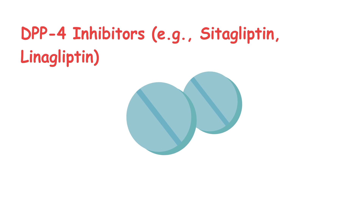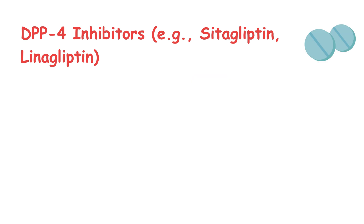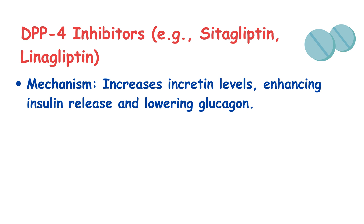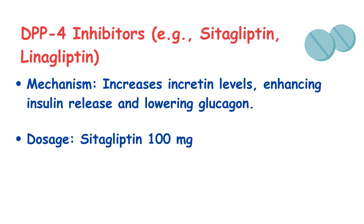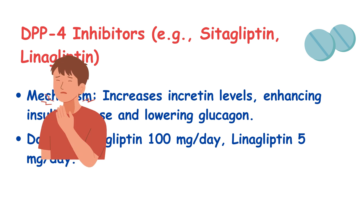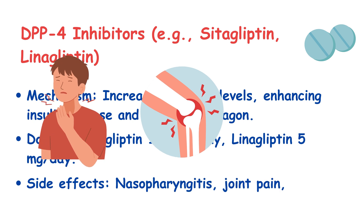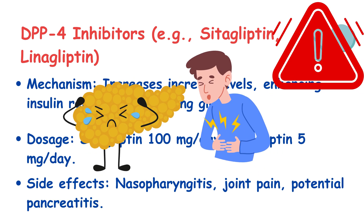DPP-4 inhibitors — examples include sitagliptin and linagliptin. These work by boosting incretin hormones, which increases insulin secretion and reduces glucagon levels. Typical dosages: sitagliptin 100 mg and linagliptin 5 mg daily. Side effects are mild, usually just a sore throat or joint pain, but keep an eye out for pancreatitis.